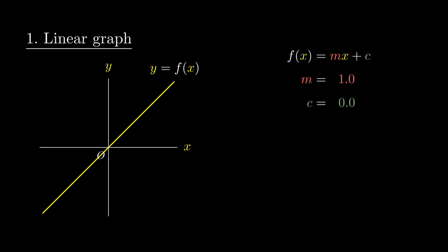As we vary the number m, the steepness or gradient of the function changes, and if m equals 0, we obtain a horizontal line. The more negative m is, the steeper it is in a downward direction. This tells us that the gradient of the line is precisely m.